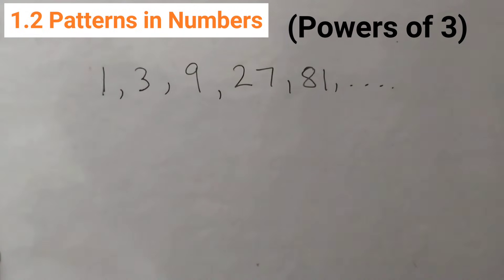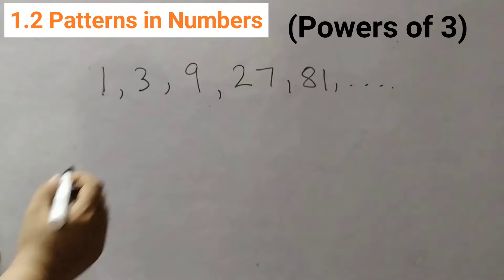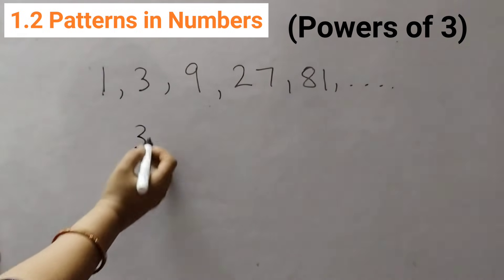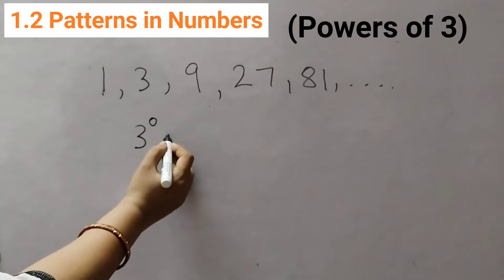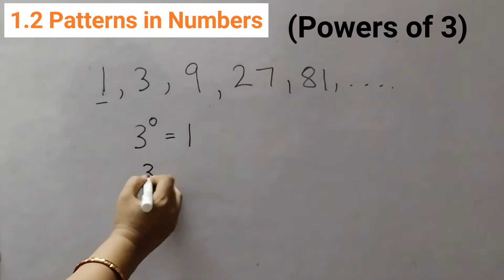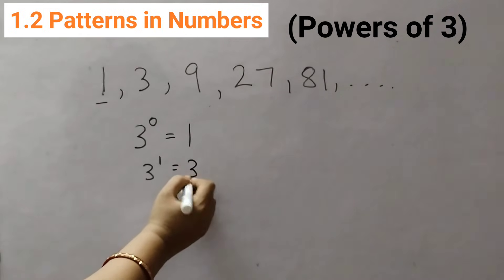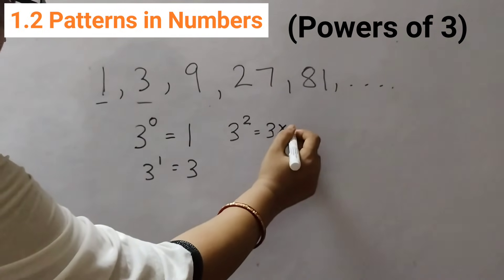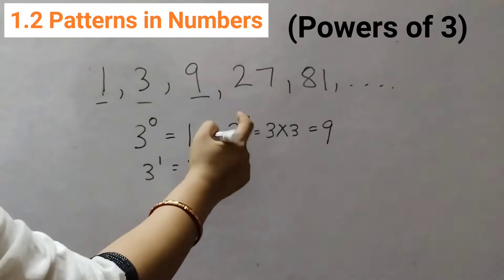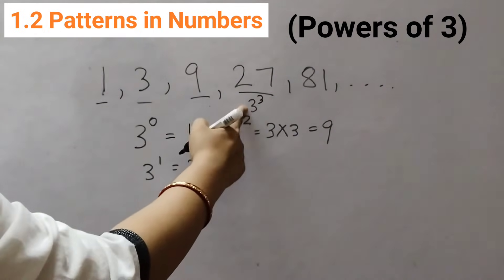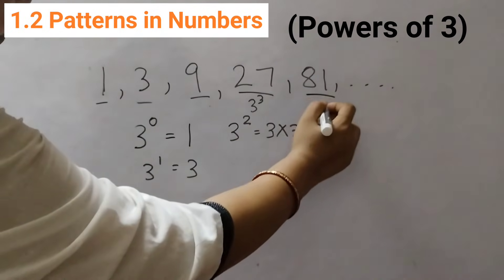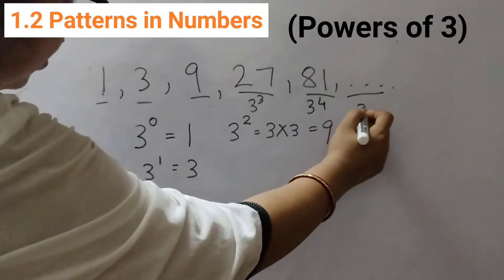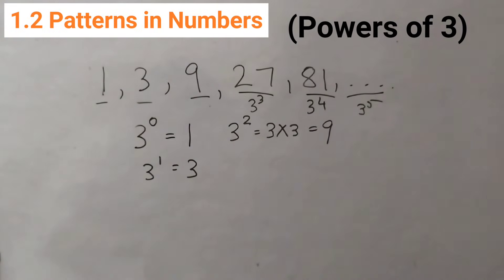The last type of number sequence is 1, 3, 9, 27, 81 — these are called powers of 3. So 3 is the base. 3 to the power of 0 equals 1. 3 to the power of 1 equals 3. 3 to the power of 2 means 3 multiplied 2 times: 3×3=9. 3 to the power of 3 is 27. 3 to the power of 4 is 81. The next term would be 3 to the power of 5.